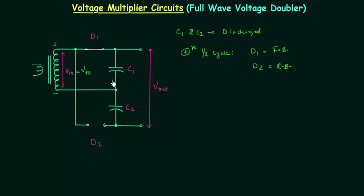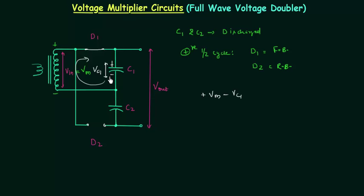Now we calculate the voltage across capacitor C1, which we call Vc1. Using Kirchhoff's voltage law: Vm minus Vc1 equals zero, because this plate is connected to the positive terminal and has positive charge, while this plate is connected to the negative terminal and has negative charge. Therefore Vc1 is equal to Vm. This is what we have in the positive half cycle.